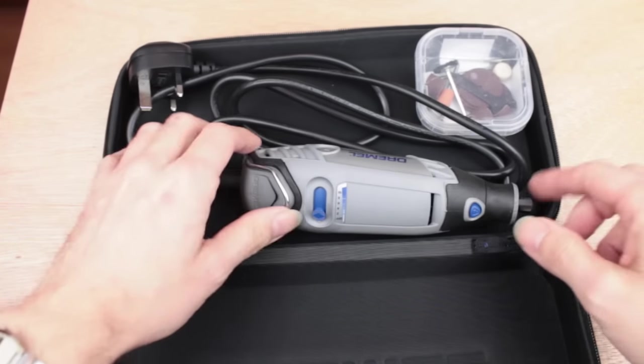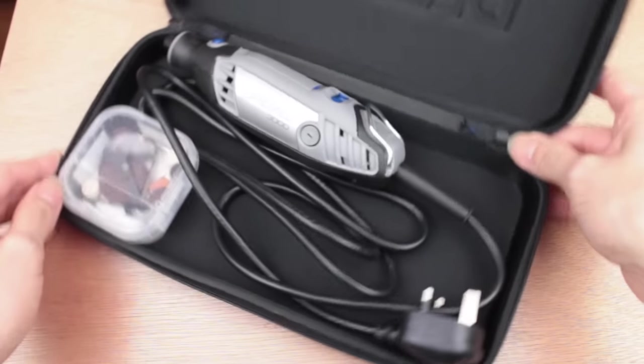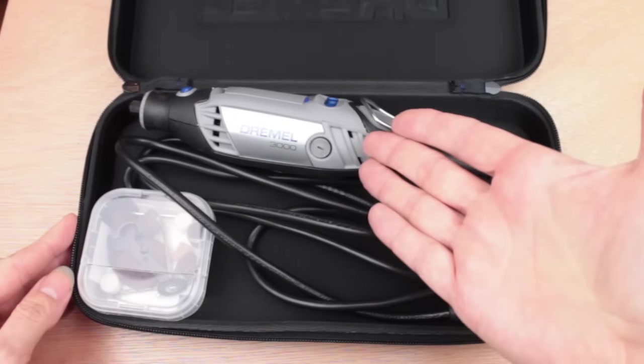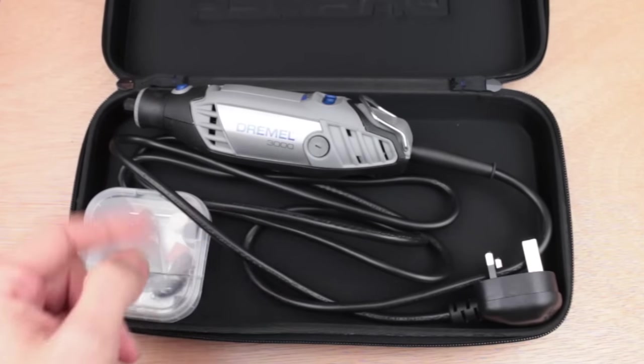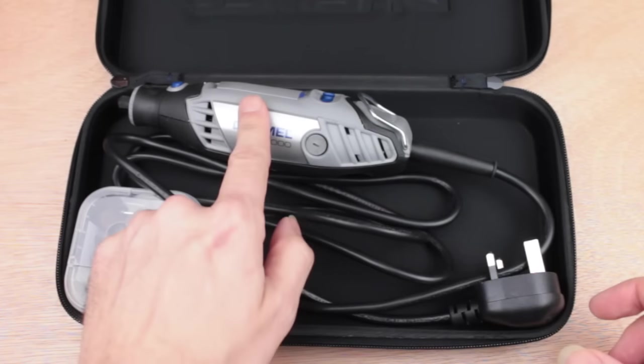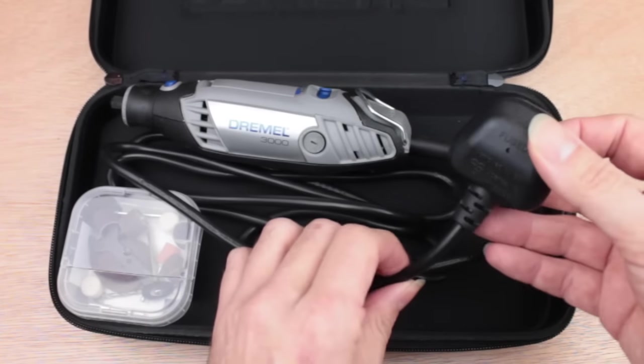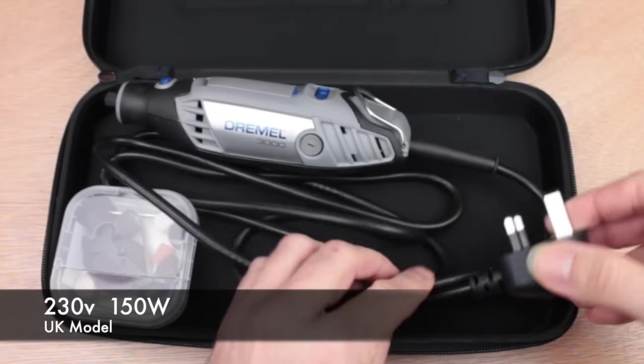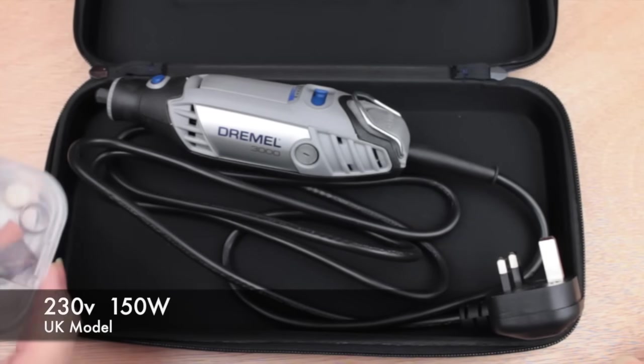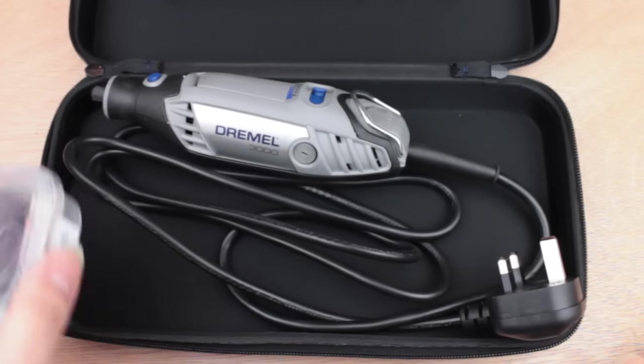We open it up and we can see what we've got here. Let's just turn that around for you. So here we have the tool itself, this is the Dremel 3000 version. This is the UK version so it comes fitted with a British UK plug, and we have a little plastic box here with some accessories to get you started.